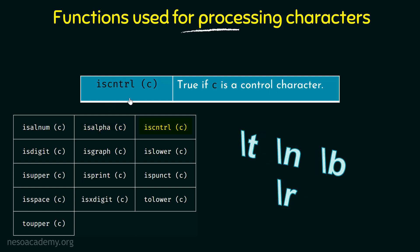Next we have ISCNTRL, which checks if C is a control character. Control characters are characters like tab, newline, carriage return, etc. If it is a control character like any one of these then it returns true, and false otherwise.